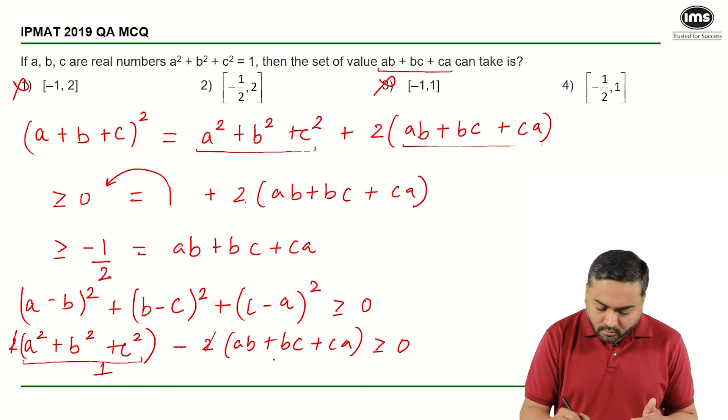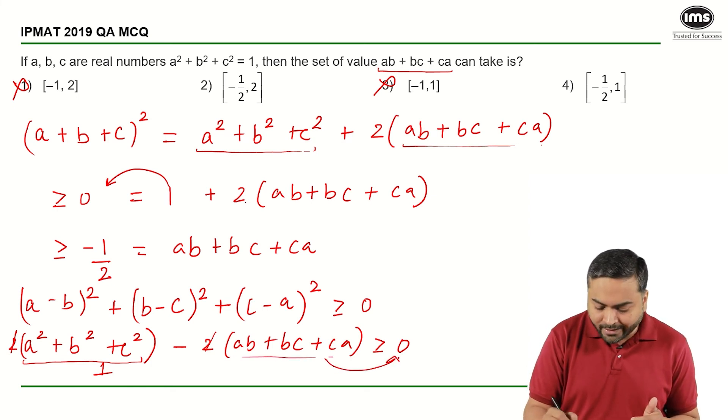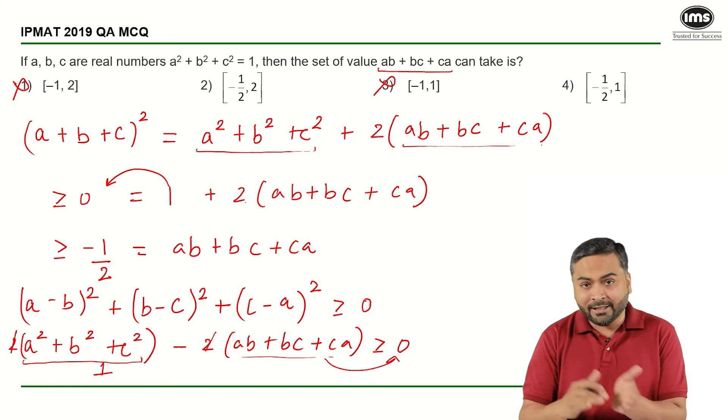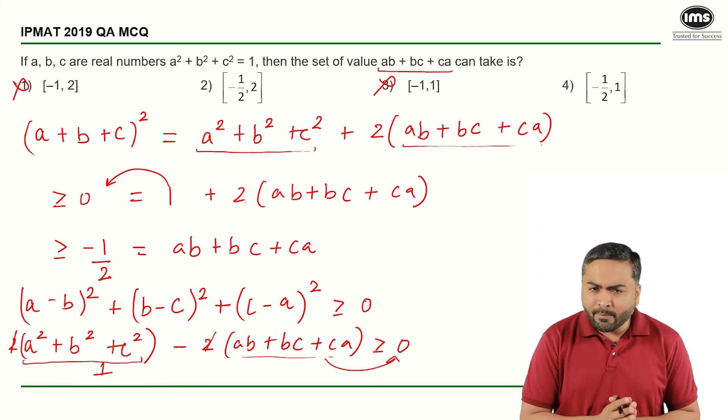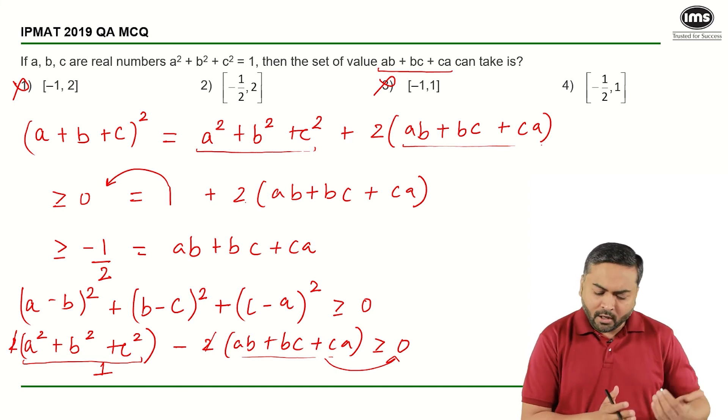So if I take this expression on this side, I will get 1 ≥ AB + BC + CA, or in other words, I will get AB + BC + CA ≤ 1.